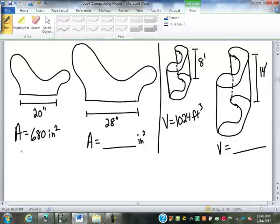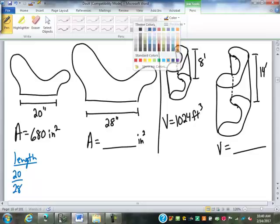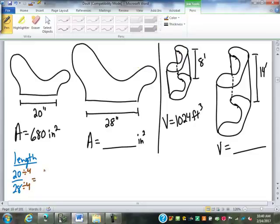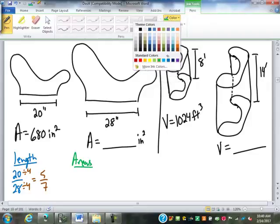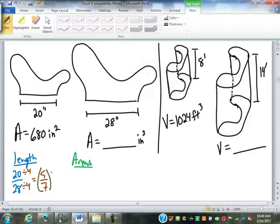So for this first one here, we've got a ratio of lengths, which is 20 to 28. I'm going to reduce that to make life easier on me. I'm going to divide those by 4, it'll be 5 over 7. So then for my ratio of areas, what am I going to do to that 5 over 7? Square it, which is going to give you 25 over 49.